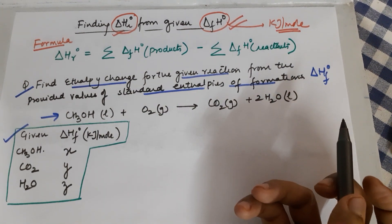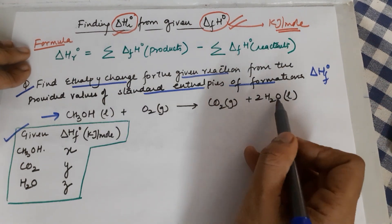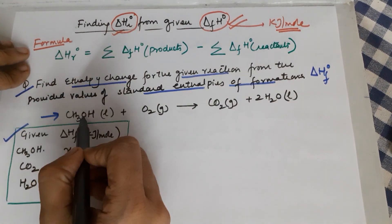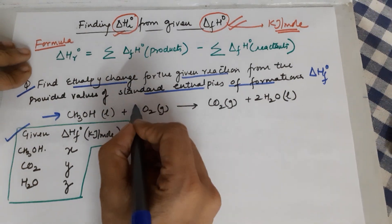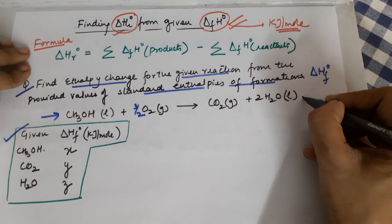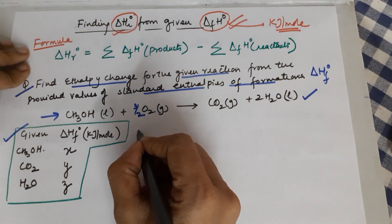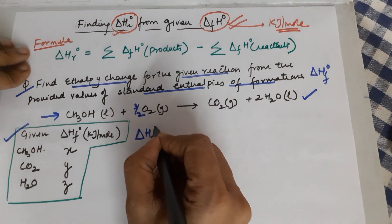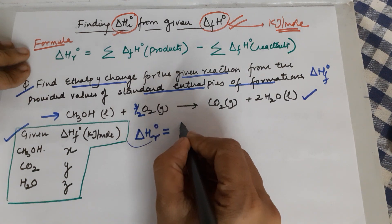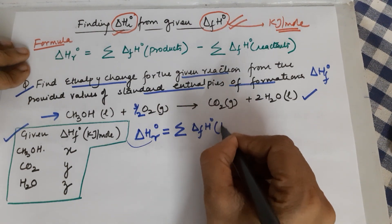Checking oxygens: there are 2 and 1, giving 3 on the reactant side, but 2 and 2, giving 4 on the product side. To balance the oxygens, you keep 4 on the product side; 1 is already with you, so you require 3 more — making it 3/2. The first step is always to balance the given equation; otherwise your calculation will go wrong. The next step is always to write the formula before solving.